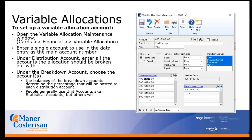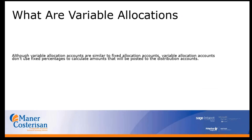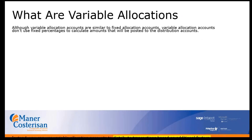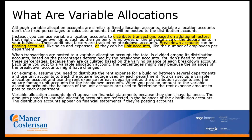People generally use unit accounts, also known as statistical accounts, but others will use posting accounts. Variable allocations allow you to distribute transactions based on additional factors, such as the number of employees, the physical size of a department, or your sales and expenses.